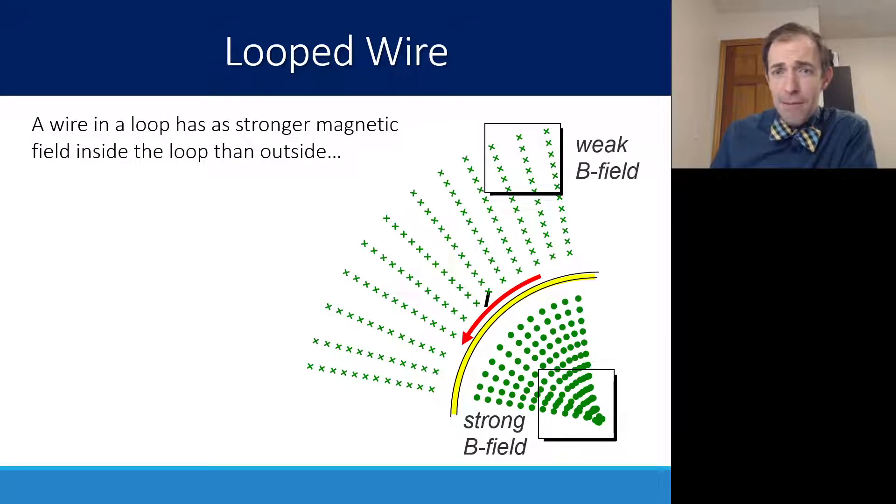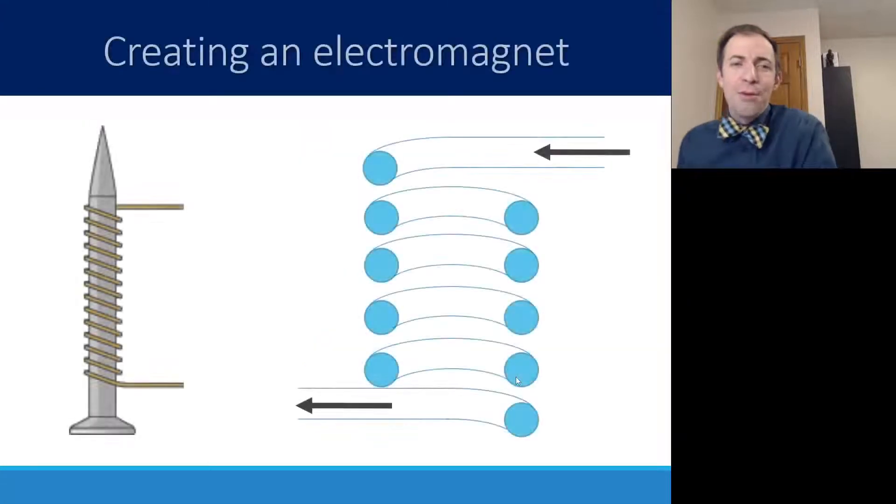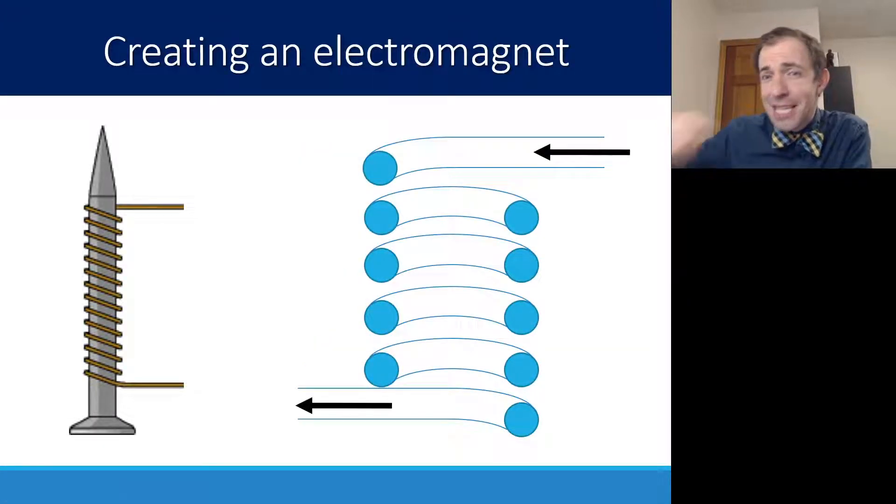If we have a straight wire, we saw that that magnetic field was pretty uniform. It degraded as we got farther away, but it was pretty constant on either side. If we loop a wire, so put a little bend in that wire, notice how we can concentrate the magnetic field on the inside of the loop and dissipate that magnetic field on the outside of the loop. We can use this to our advantage if we just keep looping.